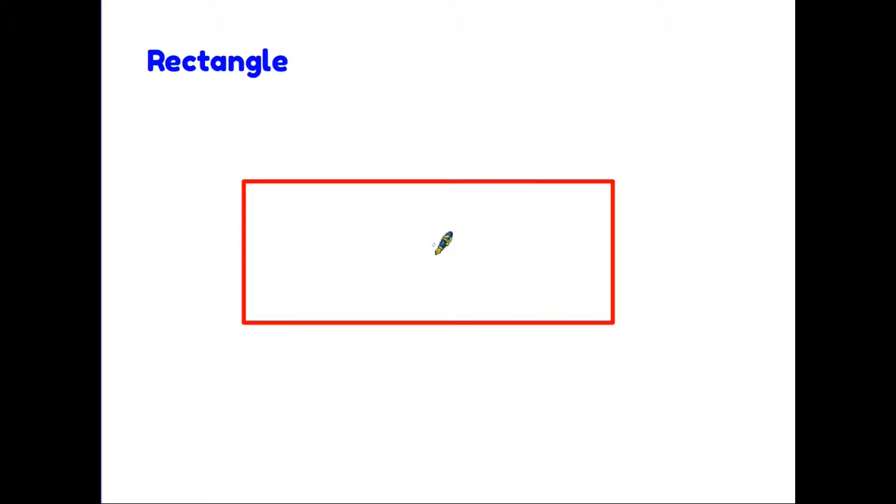Now let's compare that with a shape which in some ways is similar to a square. There are also one, two, three, four sides. And also the same as a square, each of the corners is a right angle. However, with a rectangle rather than all four sides being the same, we have two sides, the top and the bottom, which are the same length.